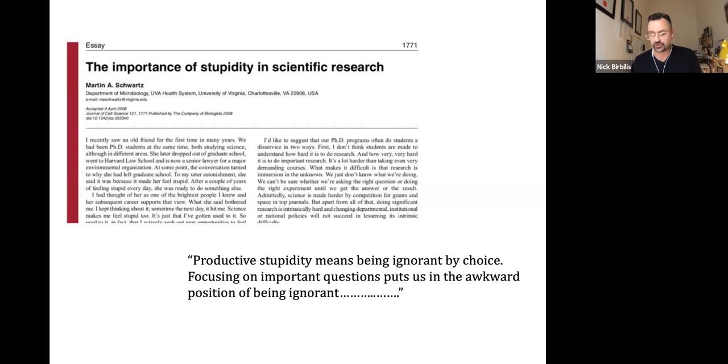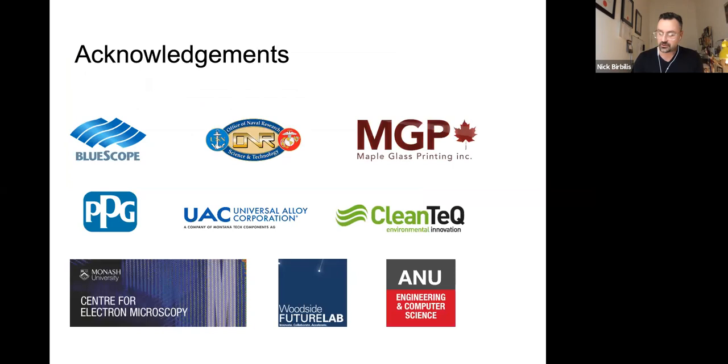So the known knowns are not very interesting. We all know what happens when you add magnesium to aluminium or vice versa. But it's the unknown unknowns that are very interesting. So with that, I do want to acknowledge some of the folks that contributed to funding towards some of the projects I showed or showcased a little bit today, including the wonderful machinery at the Monash Centre for Electron Microscopy.